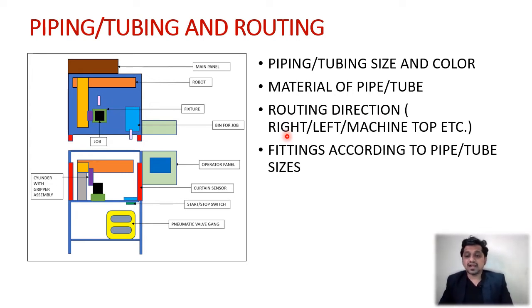Then we have routing direction: right, left, or machine top. Sometimes it happens that customer wants a specific routing direction because they have some their own standards. At that time you should ask that the routing should be taken from which direction. The pneumatic entry can be from say left side or you can take it from the right side of the machine, and then the routing can be done from the bottom side also, then you can do the routing from top side also.